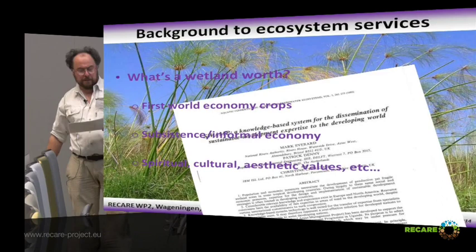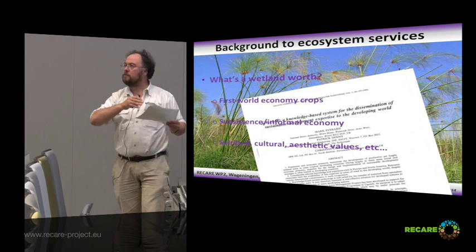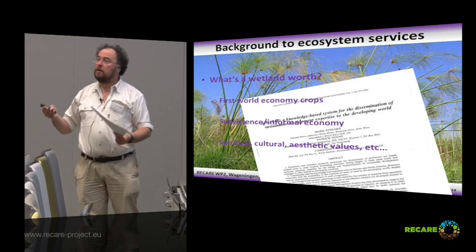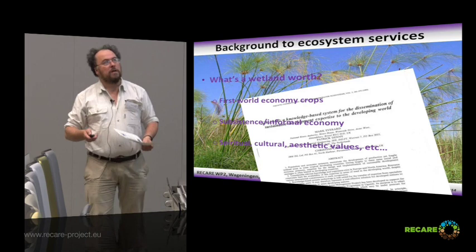My background to ecosystem services goes back to Uganda in the late 80s. As the country came out of civil war, the World Bank was ploughing a lot of money in there to convert these wastelands — these papyrus swamps — into productive rice-growing systems, so that it could join the first world economy. Within about a year or two, they were clay basins. They didn't have the resilience.